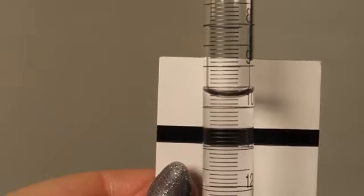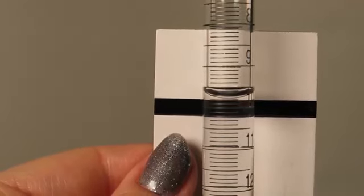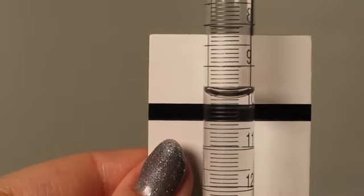Using a reading card. A reading card is used to sharpen the bottom of the meniscus to achieve more consistent readings. Notice how the bottom of the meniscus becomes darker and moves as the black line of the card is brought close.